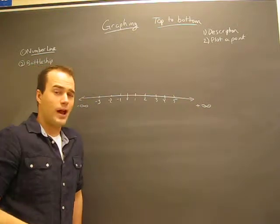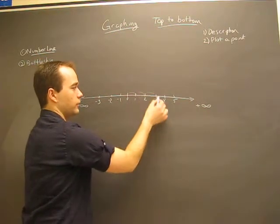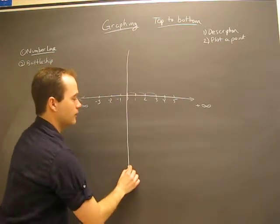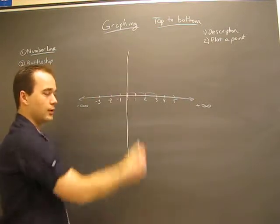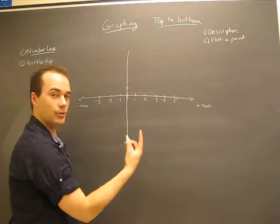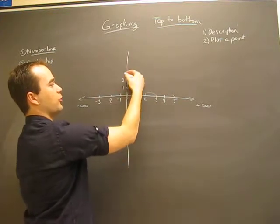It's half of a graph already. But a graph has two number lines: one going up and down, one going side to side. So I'll just continue. When the temperature goes up, that's how we mark it—positive one, positive two, positive three, positive four, all the way to plus infinity.